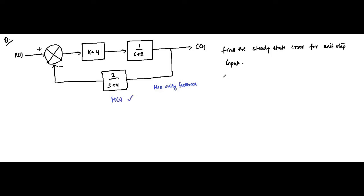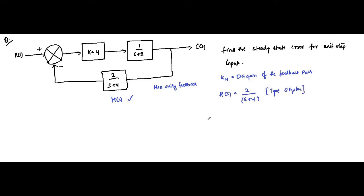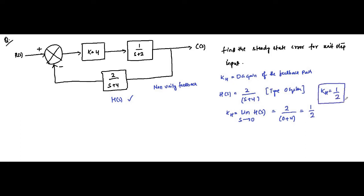The first step is to find out the DC gain of the feedback path. Here H(s) is equal to 2/(s+4). There are no poles at the origin, so this is a type 0 system. In this case, the DC gain of the feedback path is equal to limit as s tends to 0 of H(s), which is 2/(0+4) = 2/4 = 1/2. This is equal to KH, the DC gain of the feedback path.